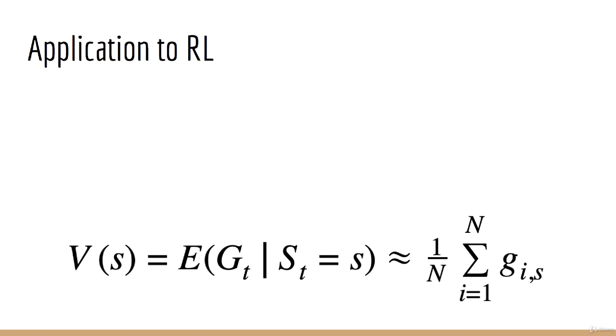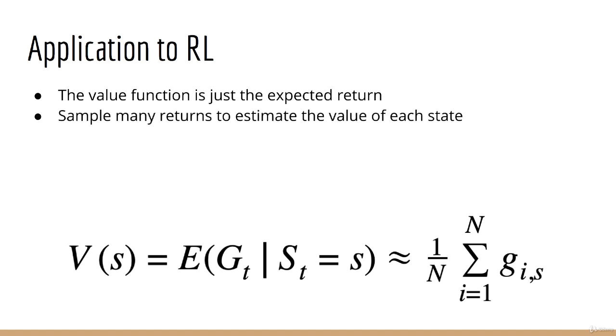Okay, so what does this have to do with reinforcement learning? Well, remember that the value function is simply the expected return. Therefore, using the sampling approach, what we can do is sample a set of returns for each state in the state space and take the average. That will give us an estimate of the value of each state.